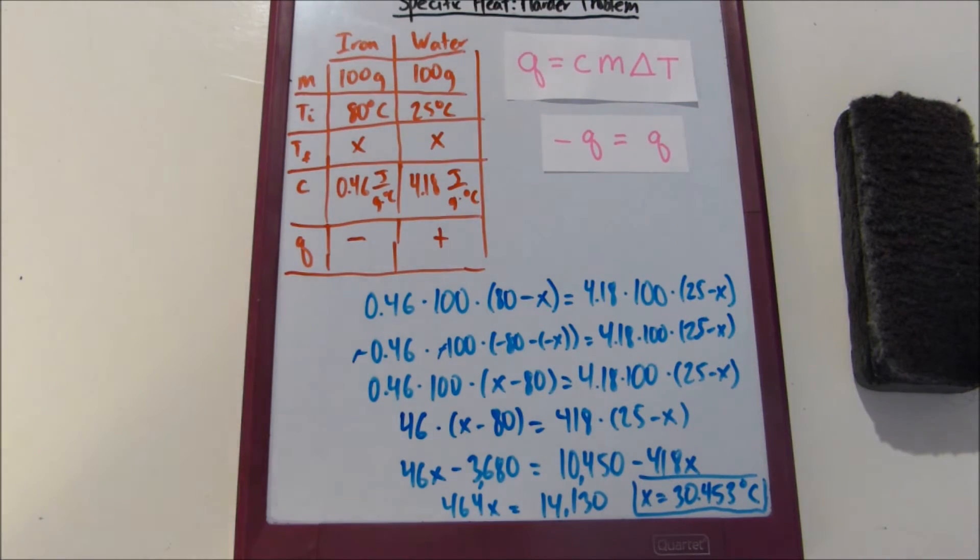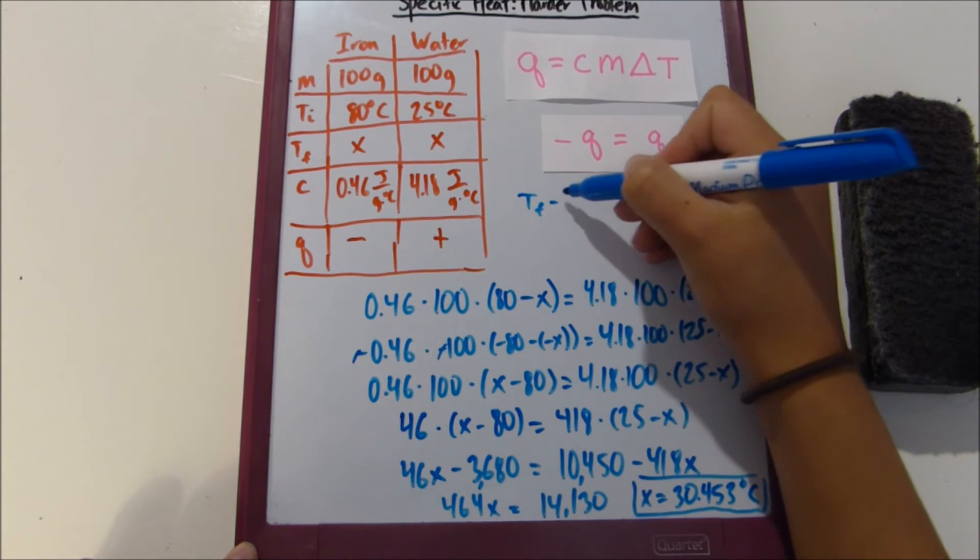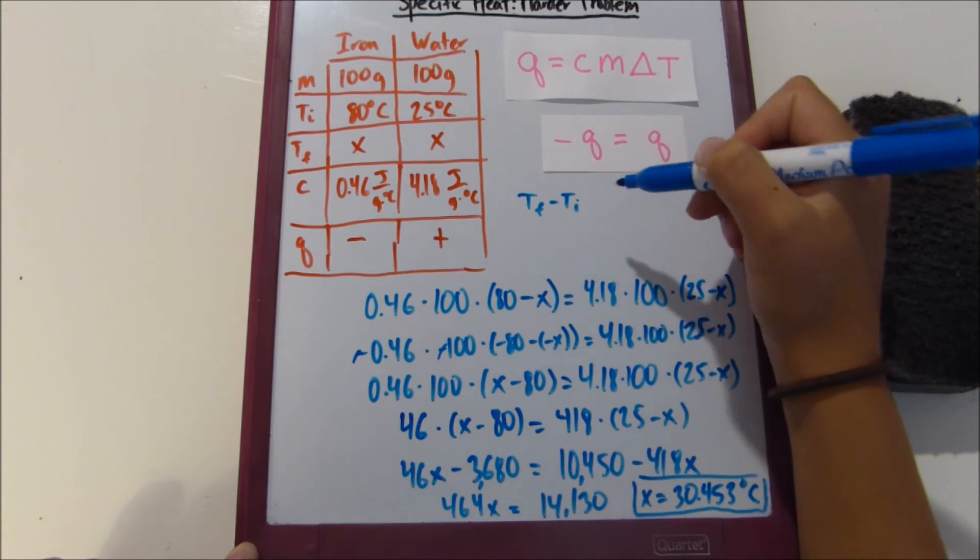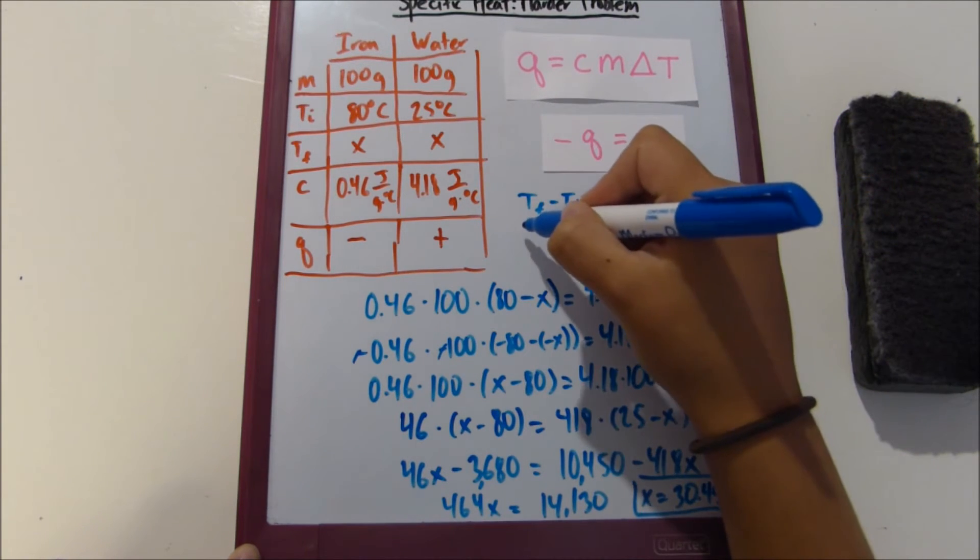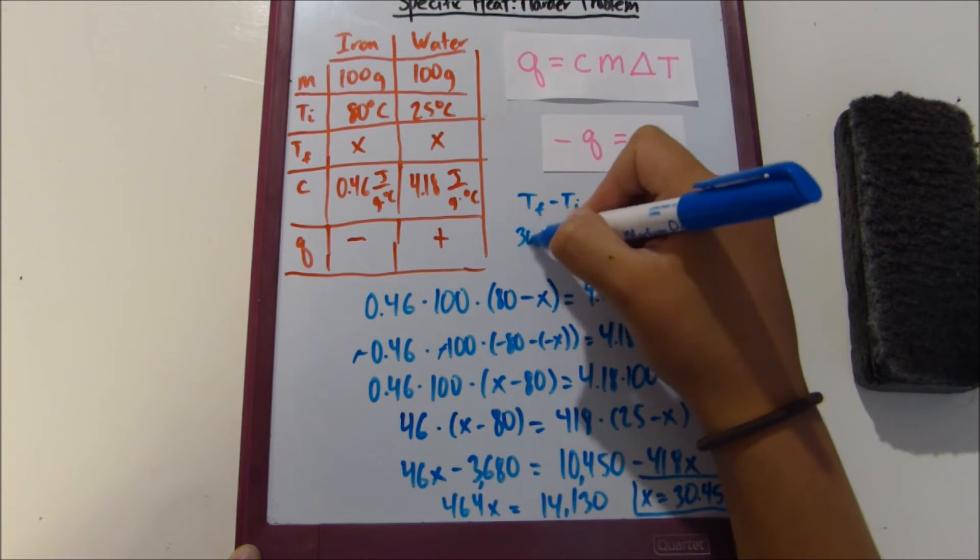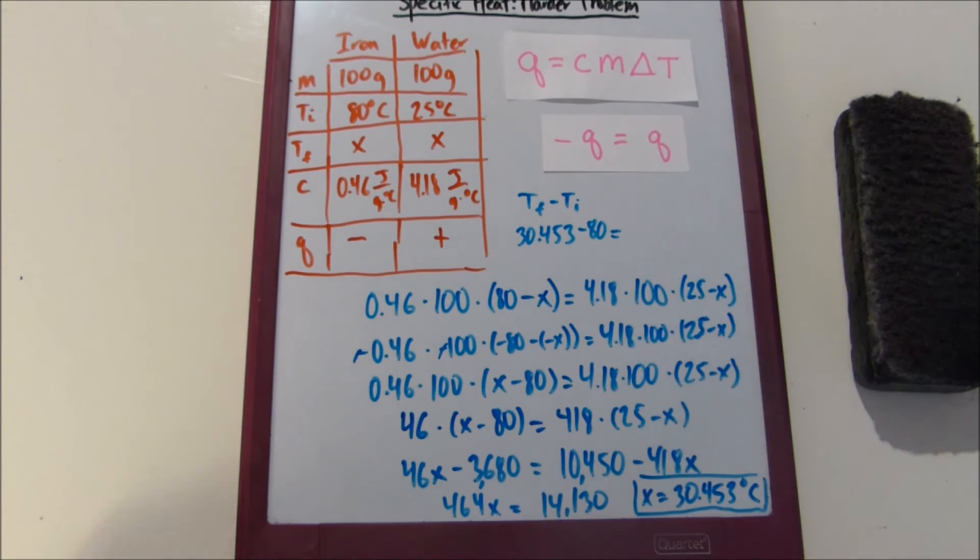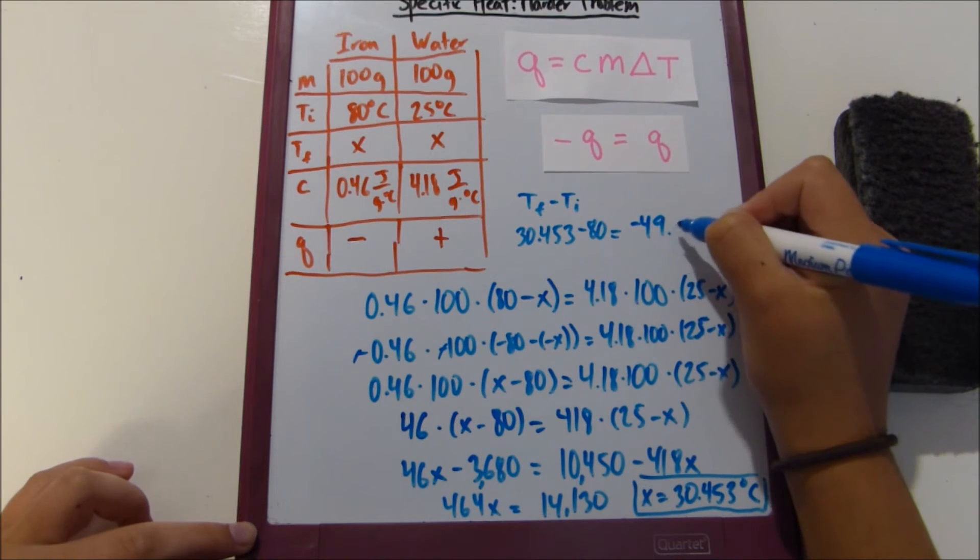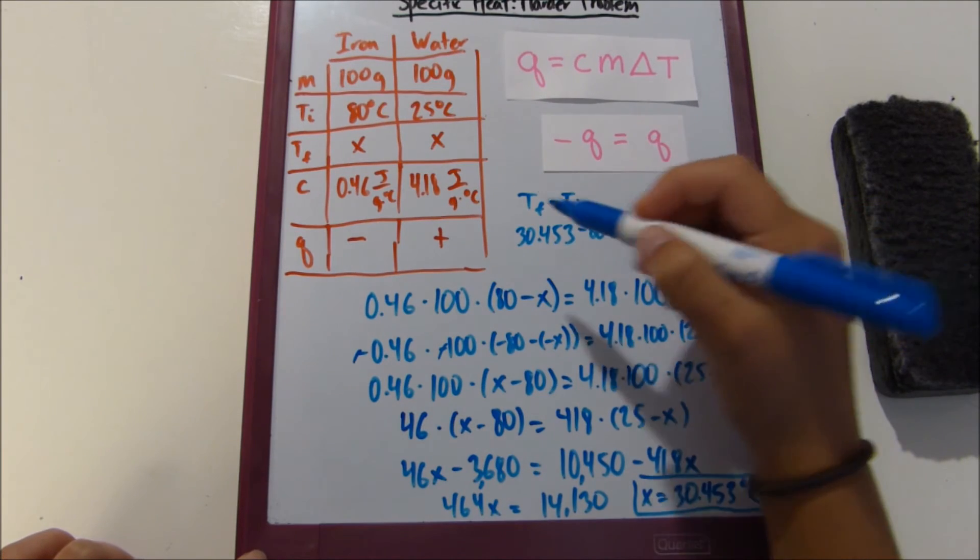So what we do is we plug this number into T final minus T initial for both iron and water. So T final is 30.453 and initial is 80. So subtract that minus 80 which is negative 49.547 degrees Celsius.